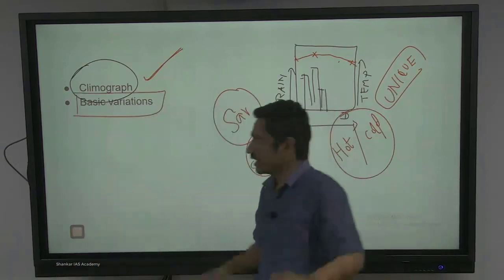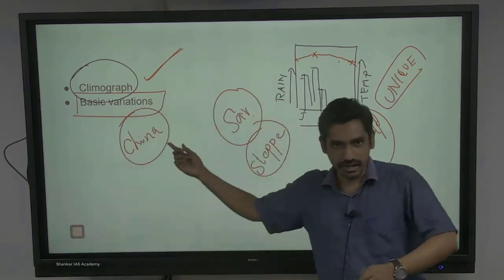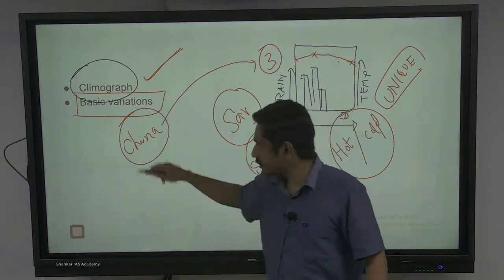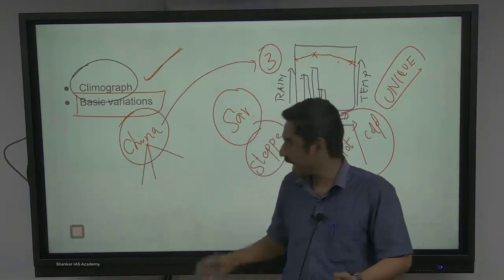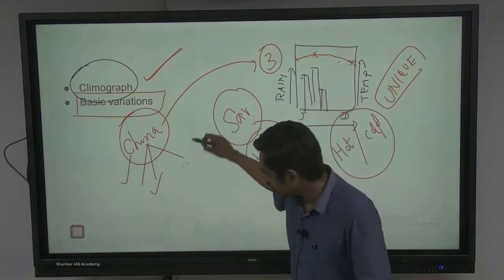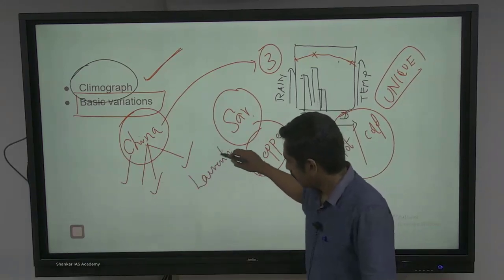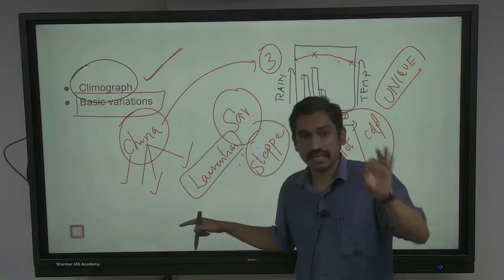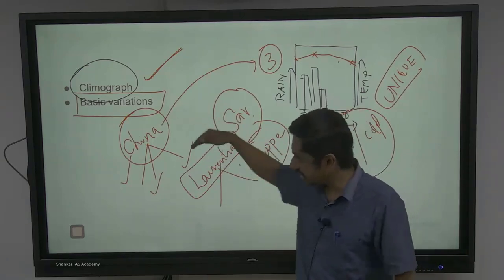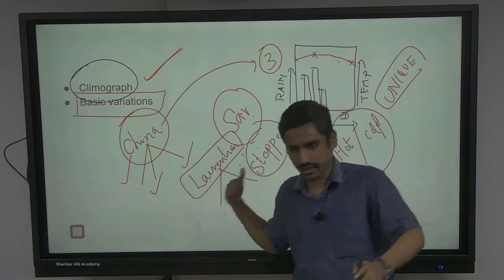For example, take China climate — your warm temperate eastern margin climate. It will have three climographs, not one, because it has three basic variations: one in China as a representative, one subtype in North America known as Gulf type, and one subtype in South Africa called the Natal type. For Laurentian climate, it is found only in the northern hemisphere — it has an Asia type and a North America type. These are basic subset variations — just be careful to cover these climographic variations for each climatic region.